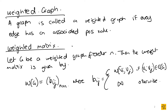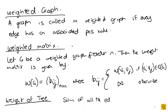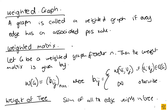We also define the weight of a tree as the sum of the weights of all edges in the tree. For example, if you had a tree with edges of weights three and four between vertices A, B, and C, the weight of that tree is seven — you just add up the weights of all the edges.